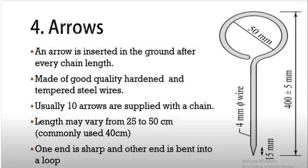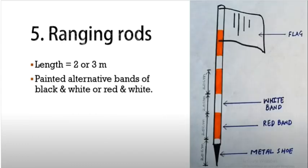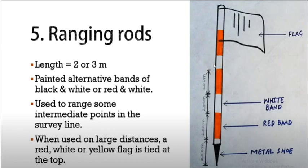Then coming to the ranging rod. Ranging rod length is generally 2 or 3 meters, painted with alternative bands of black and white or red and white. This is a flag. If you look at the ranging rod, you can see it is red and white or black and white. The ranging rod is metallic so that we can push the ranging rod into the ground. Generally, the ranging rod is 2 or 3 meters. This is painted with alternative bands of black and white or red and white.